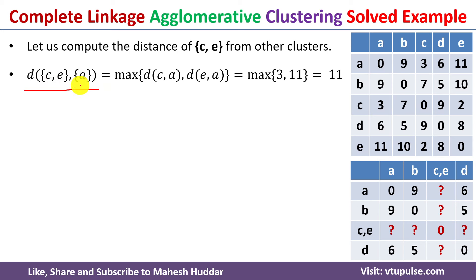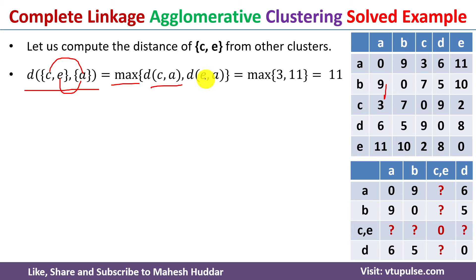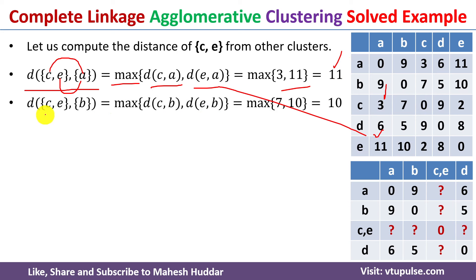To calculate the distance between clusters CE and A, we use the maximum distance formula: the maximum distance between C-to-A or E-to-A. The distance from C to A is 3, and the distance from E to A is 11. We take the maximum of these two, which is 11. So the distance from cluster CE to A is equivalent to 11.